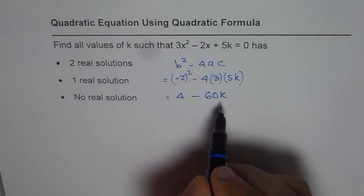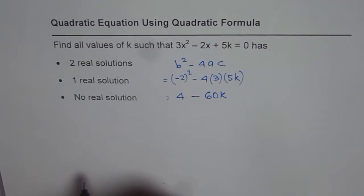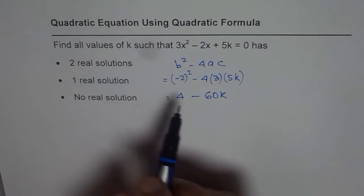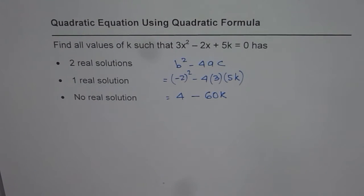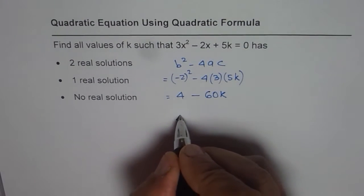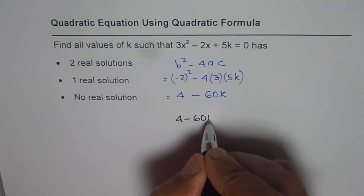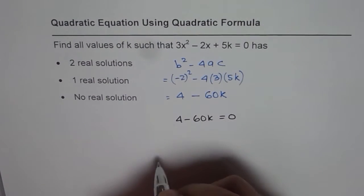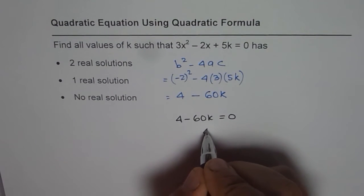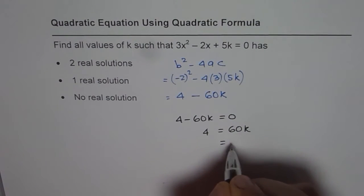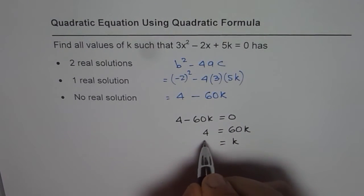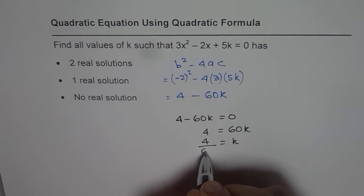Now how to find k for different conditions? Let's begin with finding k for one real solution, that is we'll equate it to 0 and then figure it out. So we'll have 4 - 60k = 0 and we can write this as 4 = 60k or k = 4/60.